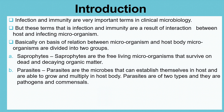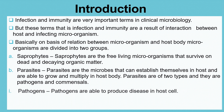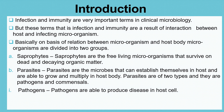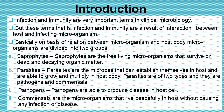A parasite is a microorganism which can establish itself — these microorganisms can survive and multiply in a host body. Parasites are of two types: first is pathogen, and second is commensal. Pathogens are microorganisms which are able to infect and cause a disease in a host. Commensals are the microorganisms that live peacefully in a host without causing any infection or disease — they are essentially harmless microorganisms present in our body.